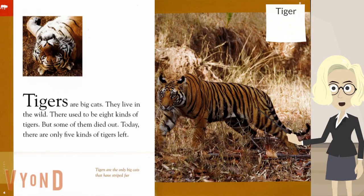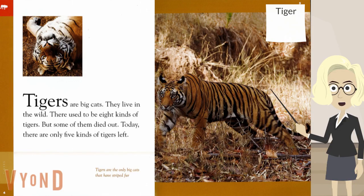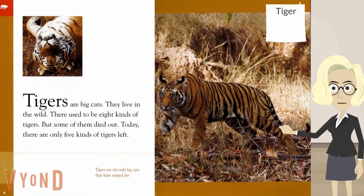I know that tiger is a keyword, and I think that cat is a keyword as well, and maybe even wild. Tigers are big cats, and it says they live in the wild. So if the book is going to talk about where the tiger is living, wild could definitely be a keyword.